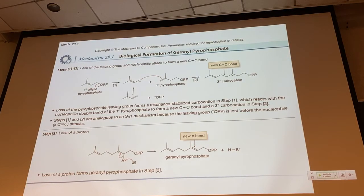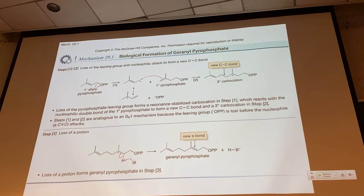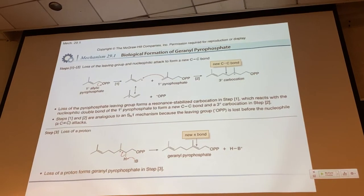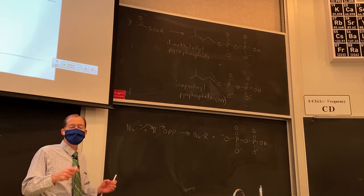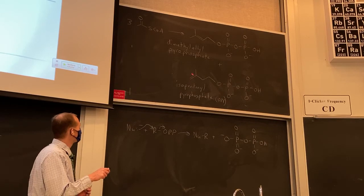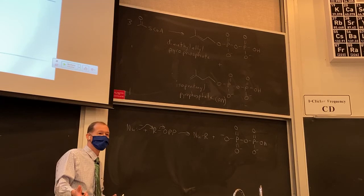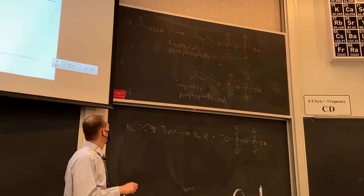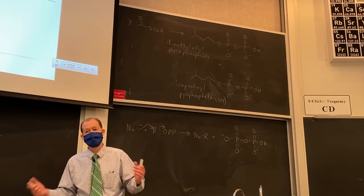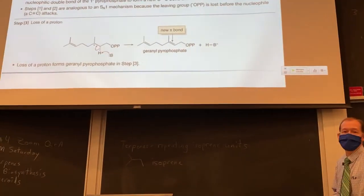The pi electrons of IPP attack the resonance-stabilized carbocation. The new carbon-carbon bond forms from the terminal carbon — both for steric reasons and because it leaves behind a tertiary carbocation, our most stable non-resonance-stabilized carbocation. There is only one carbocation represented by two resonance structures; the enzyme active site holds it so the terminal carbon is close to the incoming nucleophile. DMAPP is always the electrophile (allylic leaving group), and IPP is always the nucleophile (1,1-disubstituted alkene generating a tertiary carbocation). These two structures are ideally suited for this reaction.